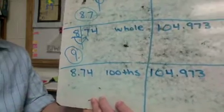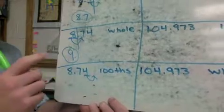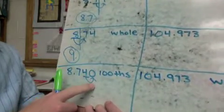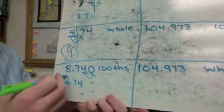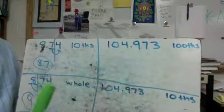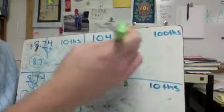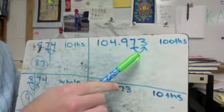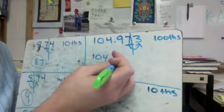Next: 8 and 74 hundredths rounded to the hundredths place. I look to the right of the hundredths place and there's nothing there — but there's definitely a zero there. That zero tells me to keep it the same. My number is exactly the same as it started: 8 and 74 hundredths. Moving on: 104 and 973 thousandths rounded to the hundredths place. Underline the hundredths and look to the right — that thousandths digit is below 5, so I keep this number the same. Answer: 104 and 97 hundredths.